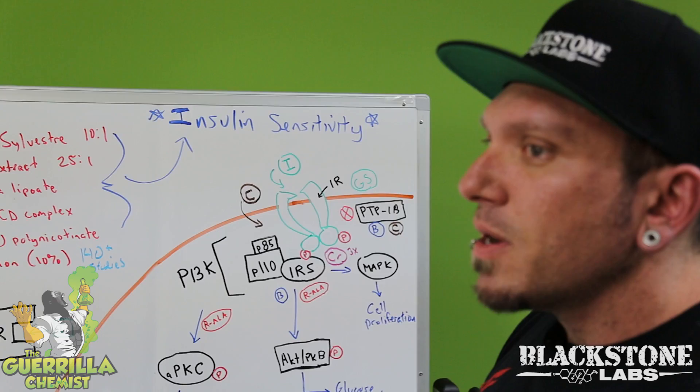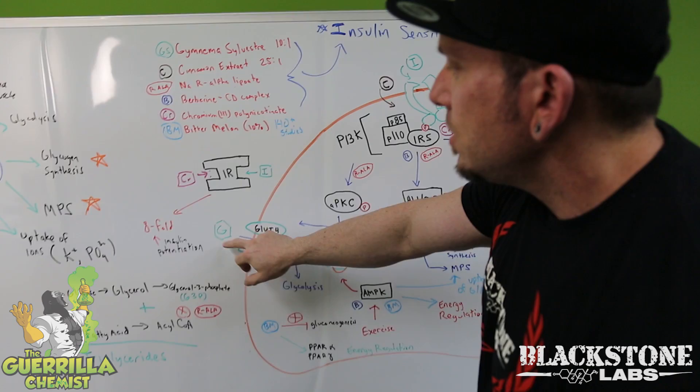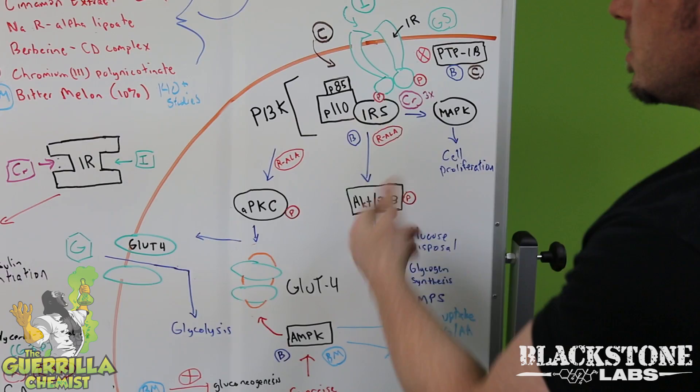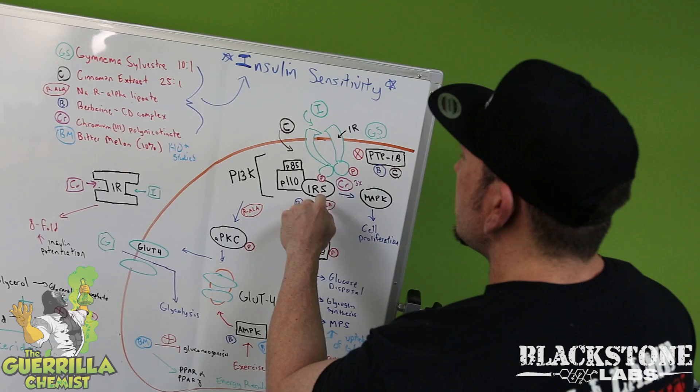It's a little scientific but I'll make it as easy as possible. So if this is a cell here, 'I' is for insulin and 'G' is for glucose — I'll get to all the other symbols in a minute. Insulin binds to the insulin receptor here, which causes multiple steps of phosphorylation — these little P's. Once it binds to this enzyme it changes its 3D structure, then it binds to the insulin receptor substrate.